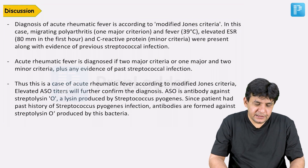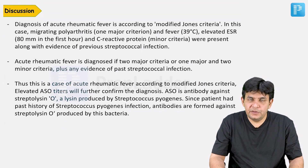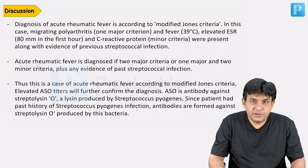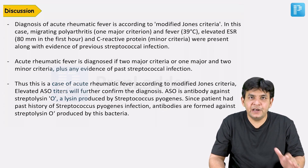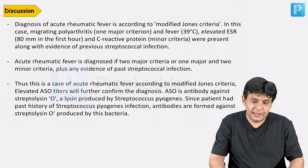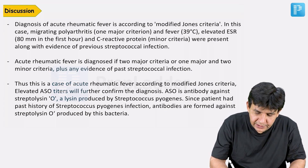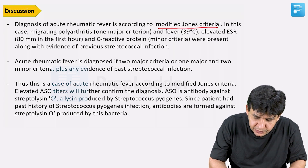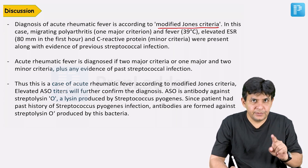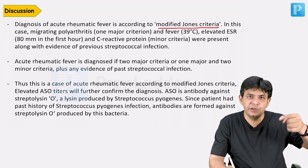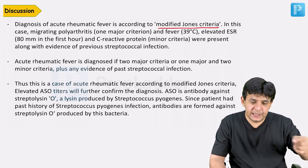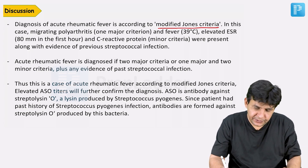For example, there is an increased PR interval and all that. Regarding the discussion, first we will discuss how we make the diagnosis of acute rheumatic fever according to a criteria termed as Modified Jones criteria. Remember: Dukes criteria is for infective endocarditis; Jones criteria is for acute rheumatic fever.